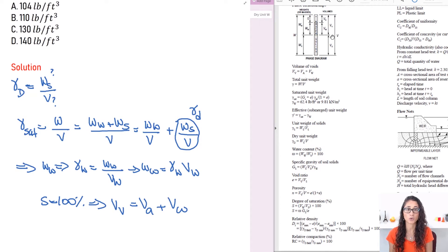Well when you have 100% saturation your air now is filled with water as well. So VA is pretty much zero. So you're left with VV is equal to the volume of the water. So I can rewrite this equation in terms of the volume of the void. So I have the unit weight of the water times VV.